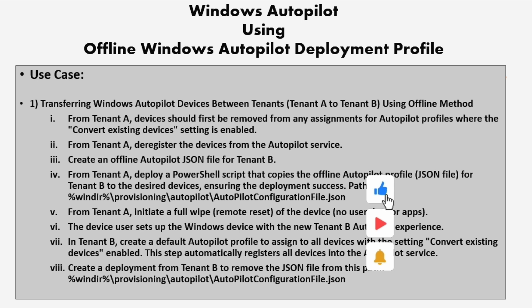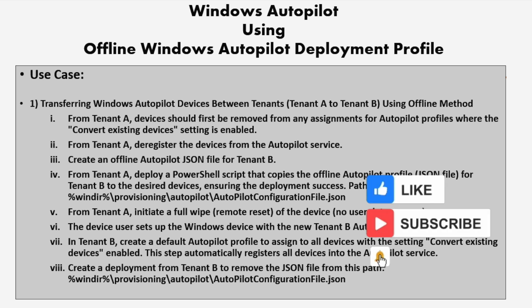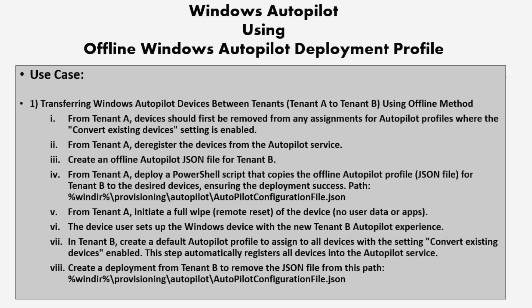Then from tenant A, we have to initiate a full wipe or we can do it using a remote reset. Then the device user sets up the Windows device with the new tenant B Autopilot experience. In tenant B, we have to create a default Autopilot profile and assign it to all devices with the setting 'Convert existing device to Autopilot' enabled. This step automatically registers all the devices in the Autopilot deployment service.